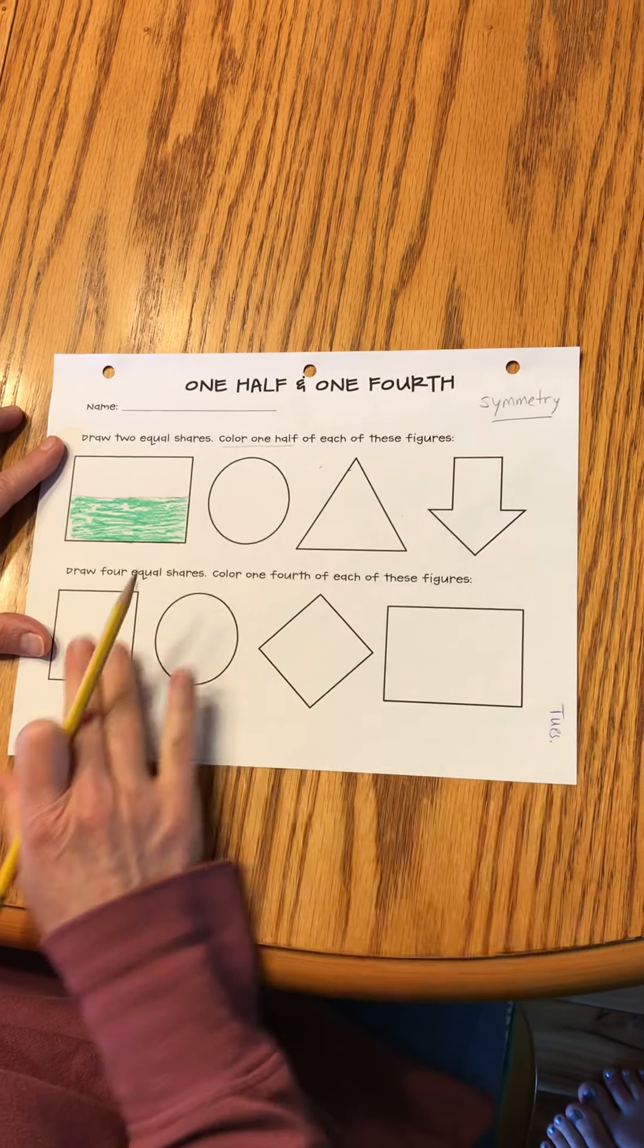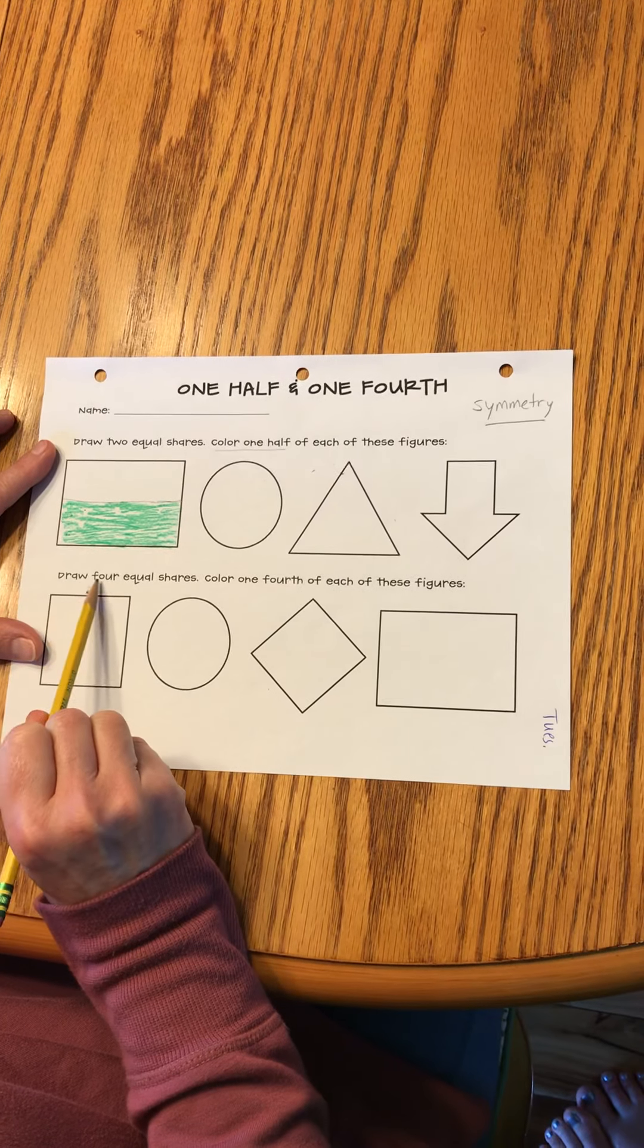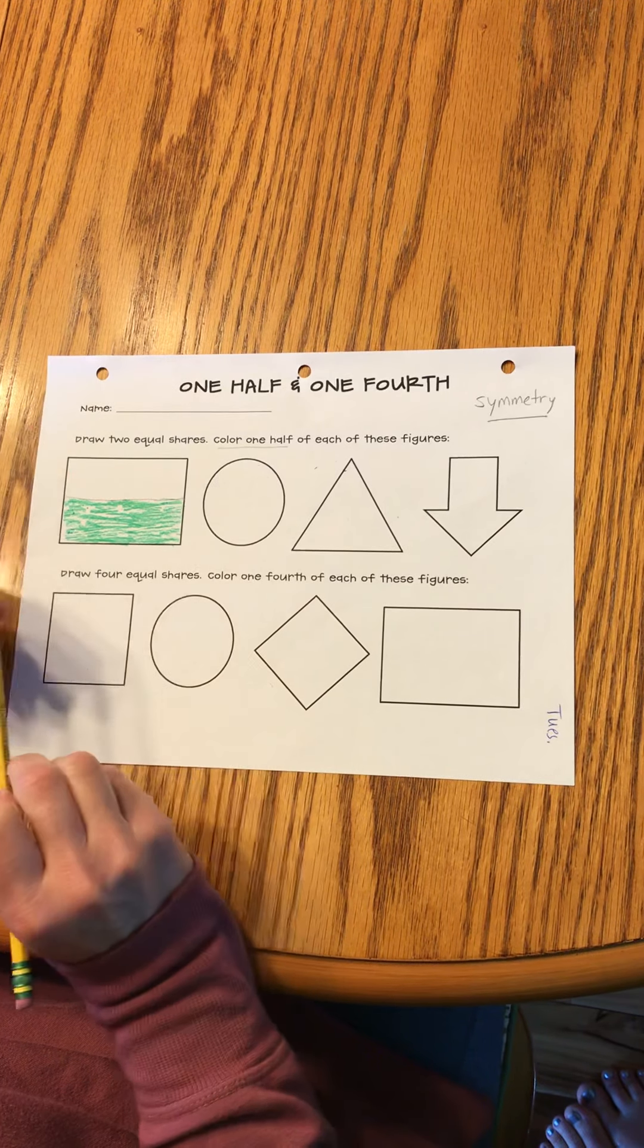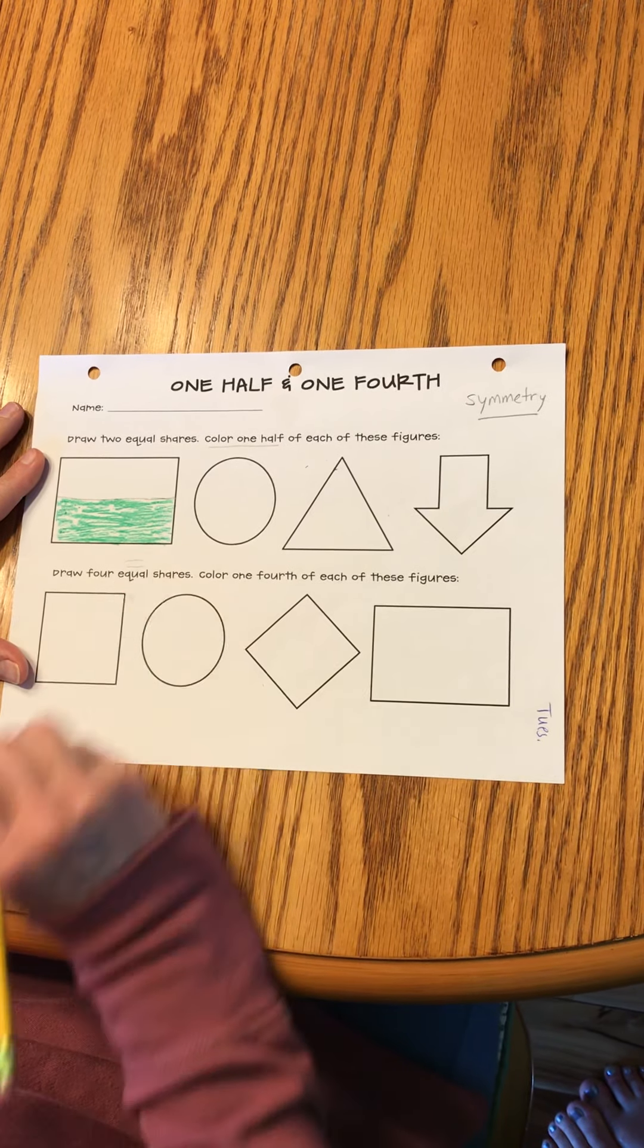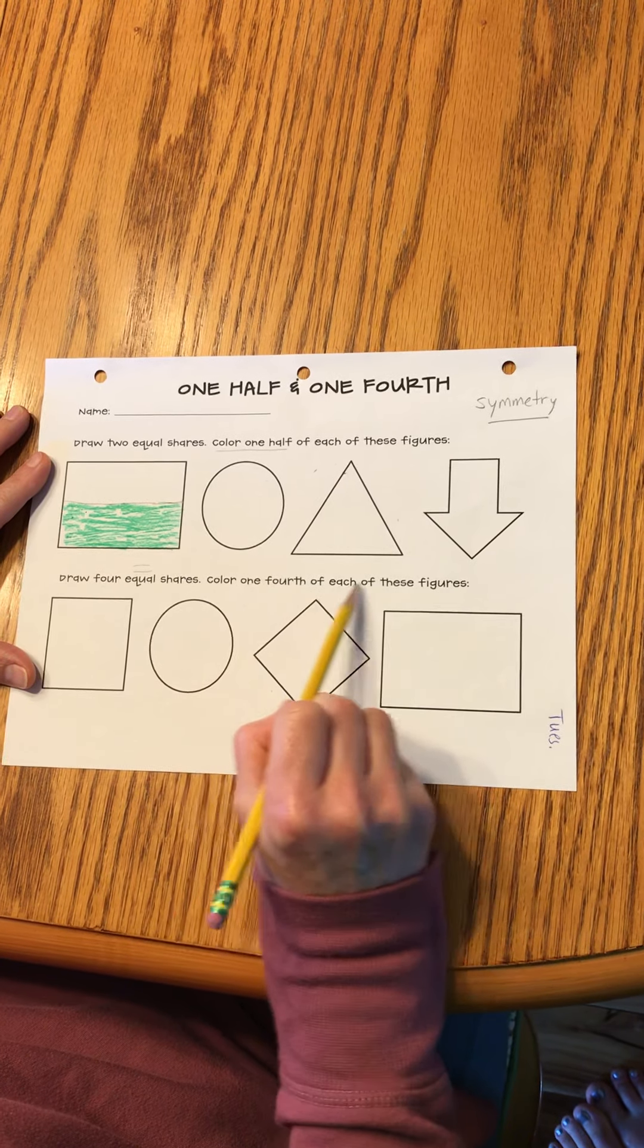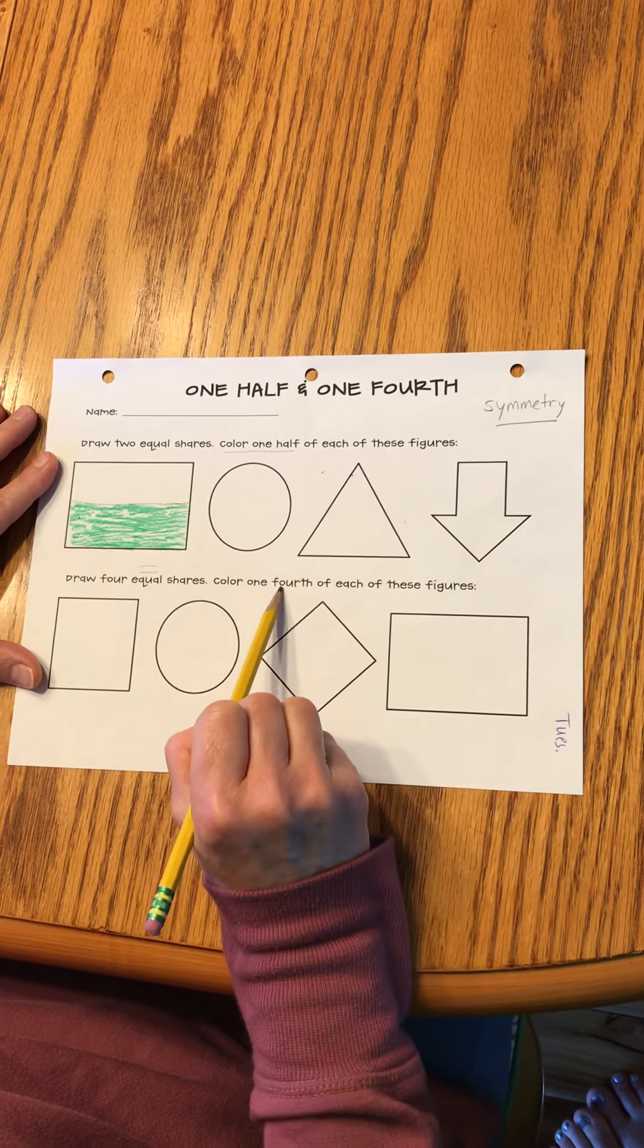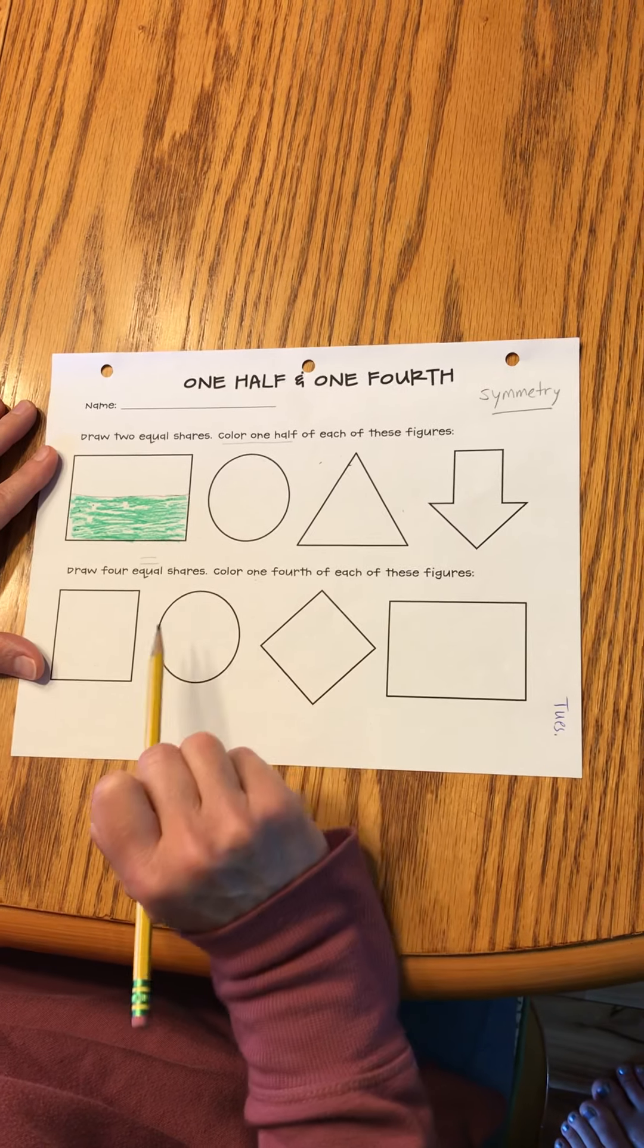After you're done with all four of those, go to the bottom. Draw four equal shares. Remember we want them to be the same. Color one fourth of each of these figures. That means we're only going to color one of the four pieces.